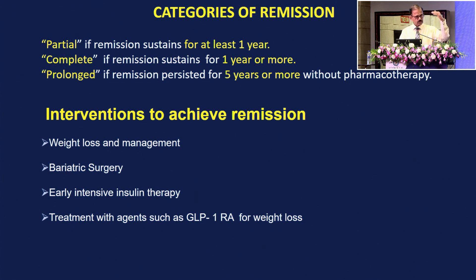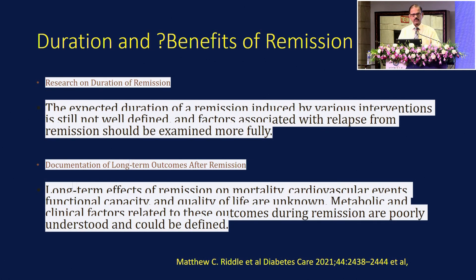There are categories of remission: partial remission if it sustains for at least one year, complete remission for more than one year, and prolonged remission for more than five years. Interventions include weight loss and management in obese individuals, bariatric surgery, and early intensive therapy with agents especially like GLP-1 analogs combined with weight loss. The duration varies considerably across studies, and the long-term effects of remission on mortality and cardiovascular benefits are not yet known.